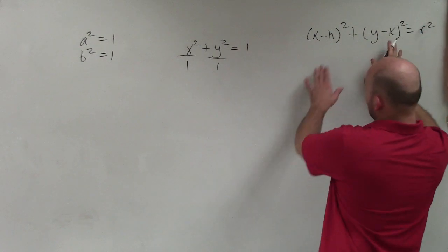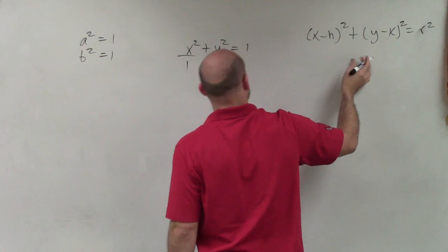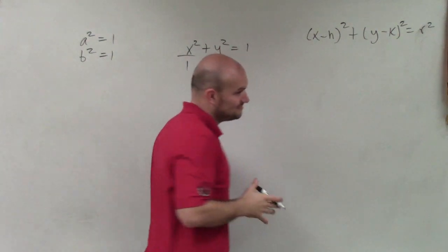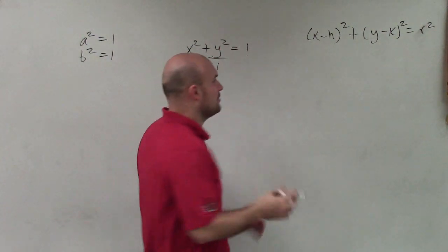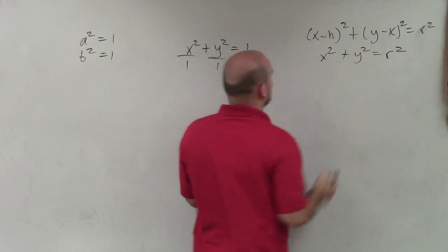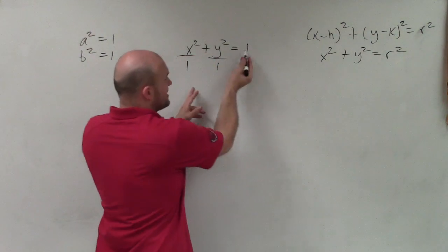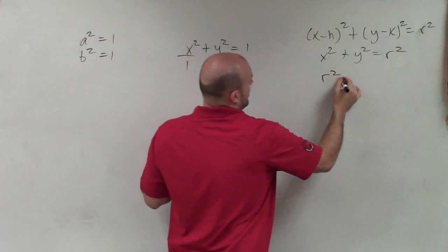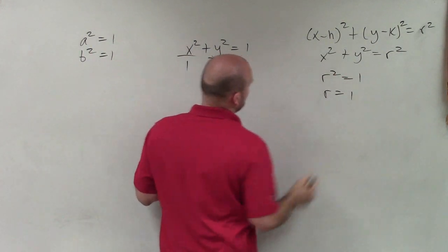And when your h and k, when your center is at the origin, we have x squared plus y squared equals r squared. So therefore, in this case, you can say that the radius r squared is equal to 1, so r equals 1.